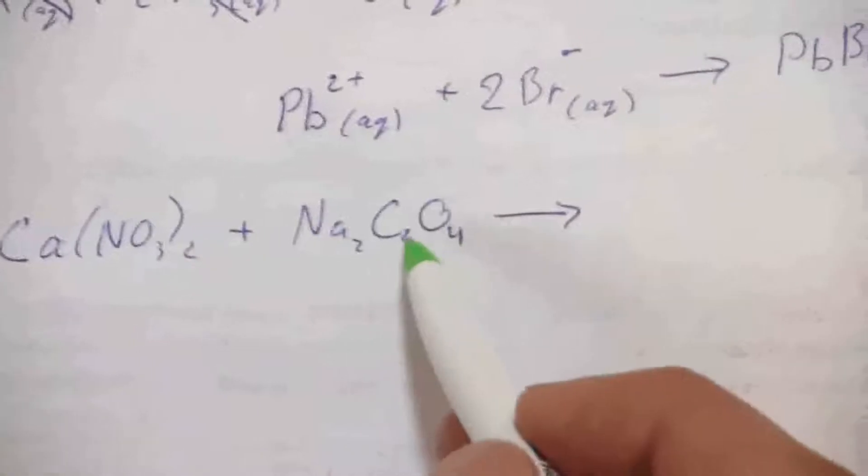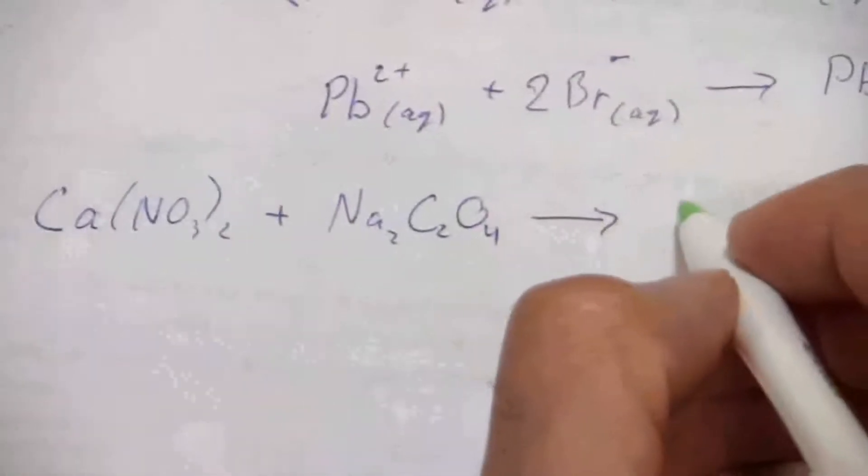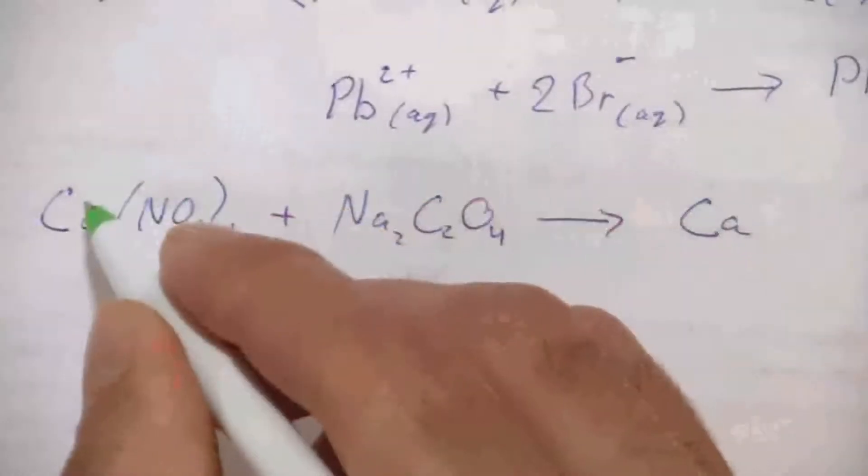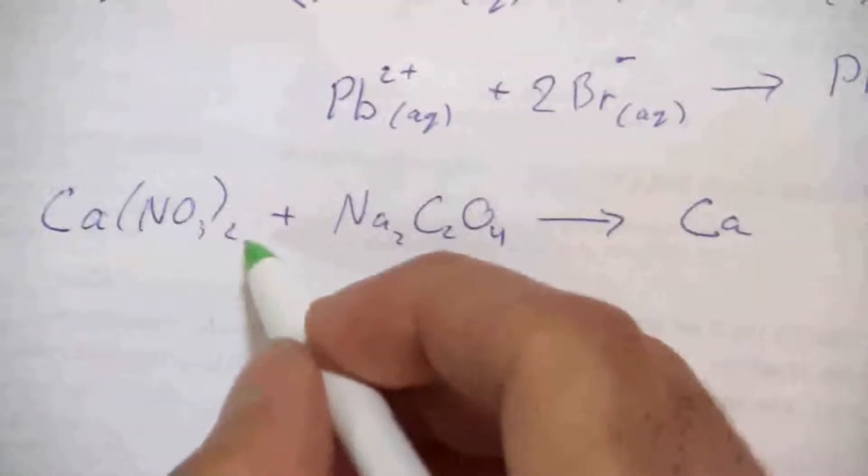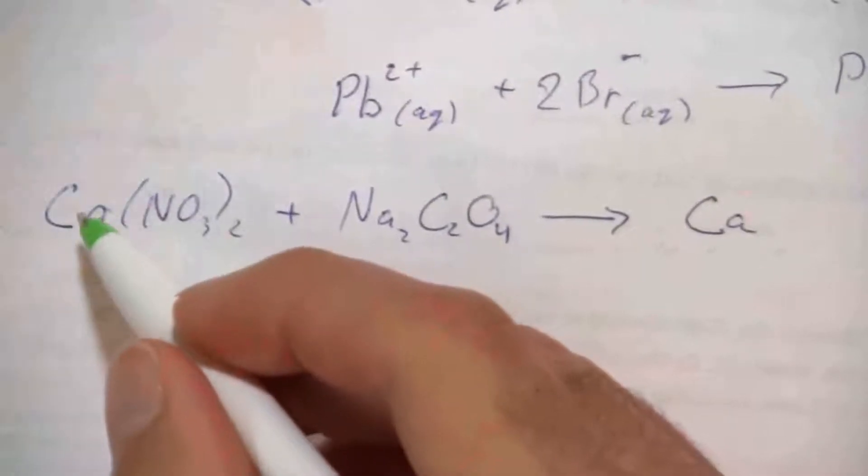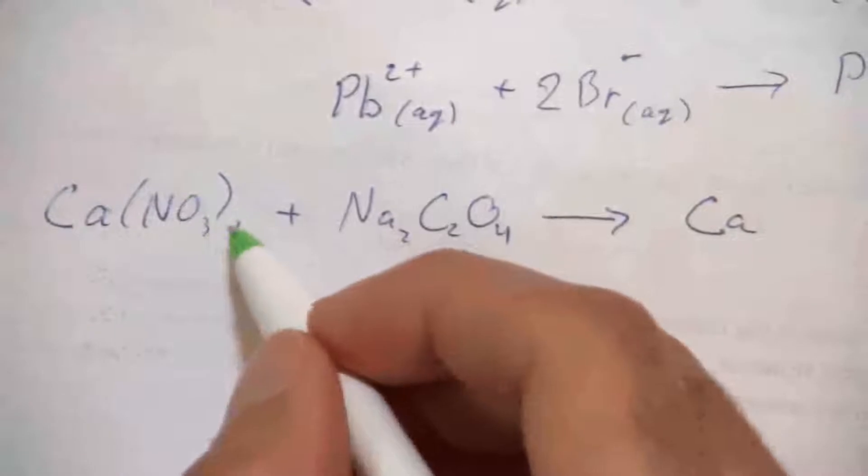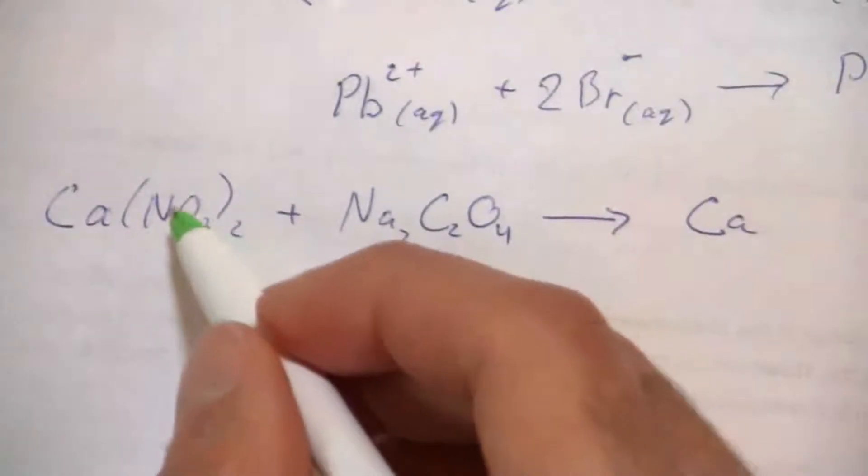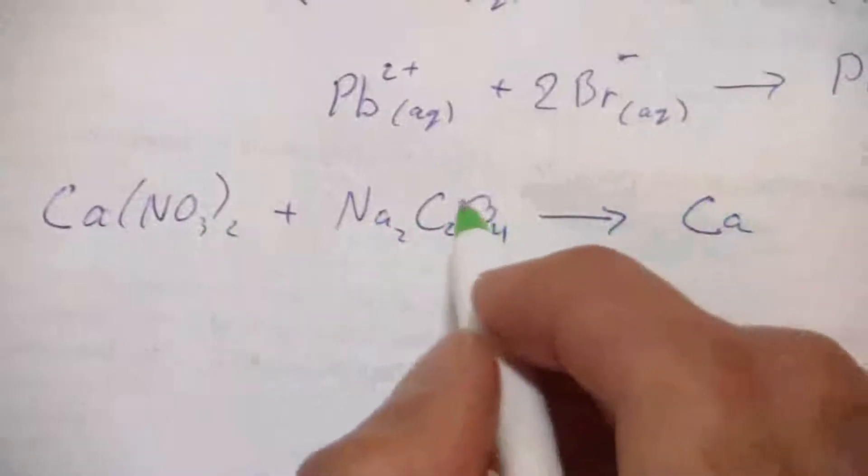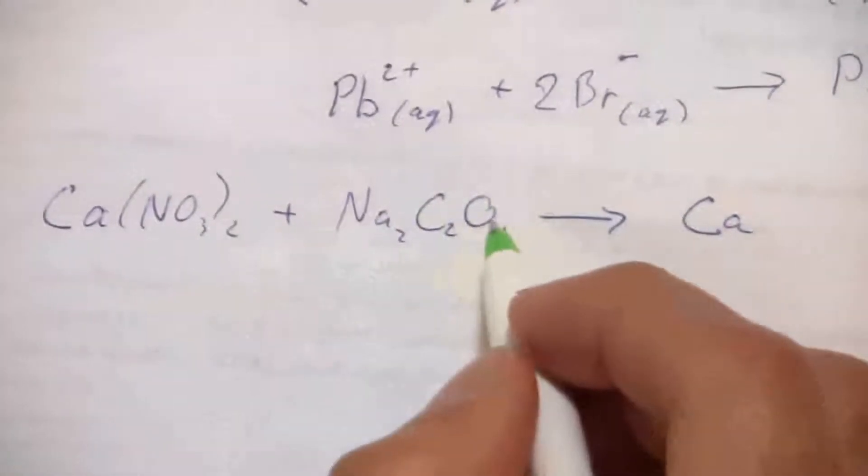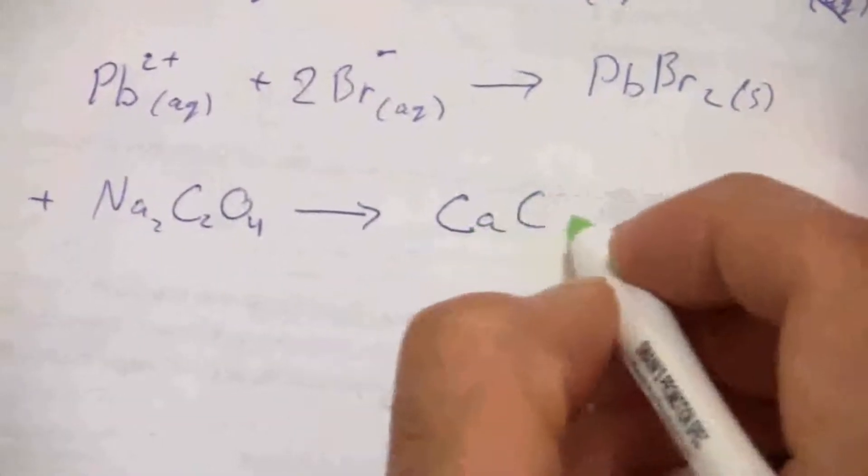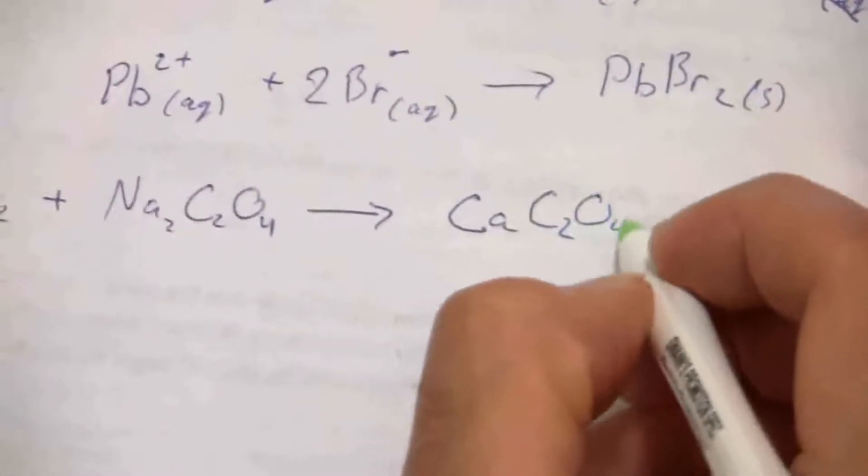That will give me calcium, which has what charge? Well, it's in the second group, the alkaline earth metals, so it has a positive two charge. I can also tell because it's balanced with two nitrates which are each a negative one. So it has a positive two. The oxalate has a negative two to balance out the sodium, and so that goes together positive two negative two, one to one.